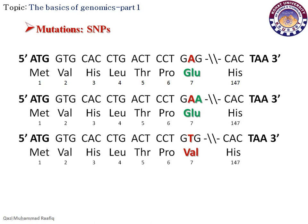In another condition, if the A in the codon is replaced with T, it affects the final product. The mutated codon GTG codes for valine instead, altering the amino acid sequence of the beta-globin protein. This mutation leads to a disease condition called sickle cell anemia, in which the oxygen-carrying capacity of the red blood cells is compromised.